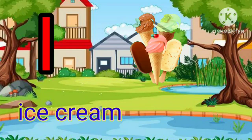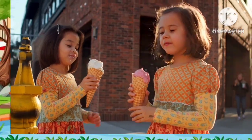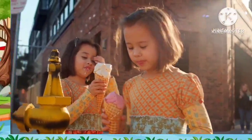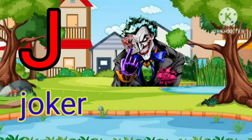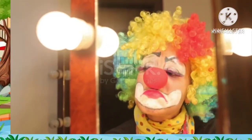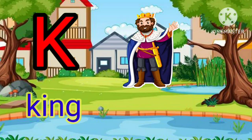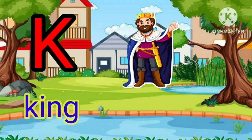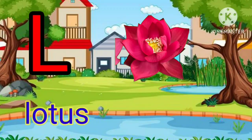I for ice cream, J for joker, K for king, L for lotus.